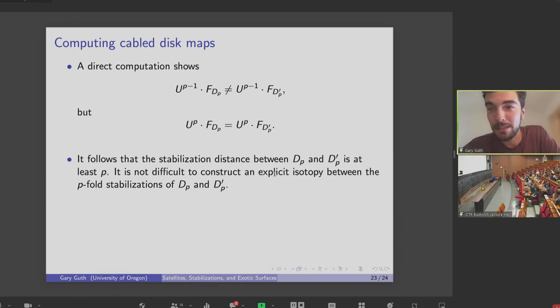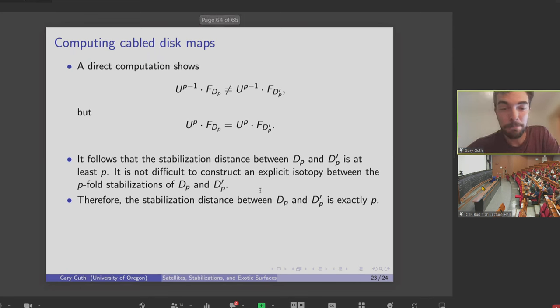So again, that shows you that the stabilization distance is at least P, which is already maybe great. And it's not so hard to show that the stabilization distance is exactly P by just constructing an explicit isotopy between the P-fold stabilizations of DP and DP prime. And that was our main result.